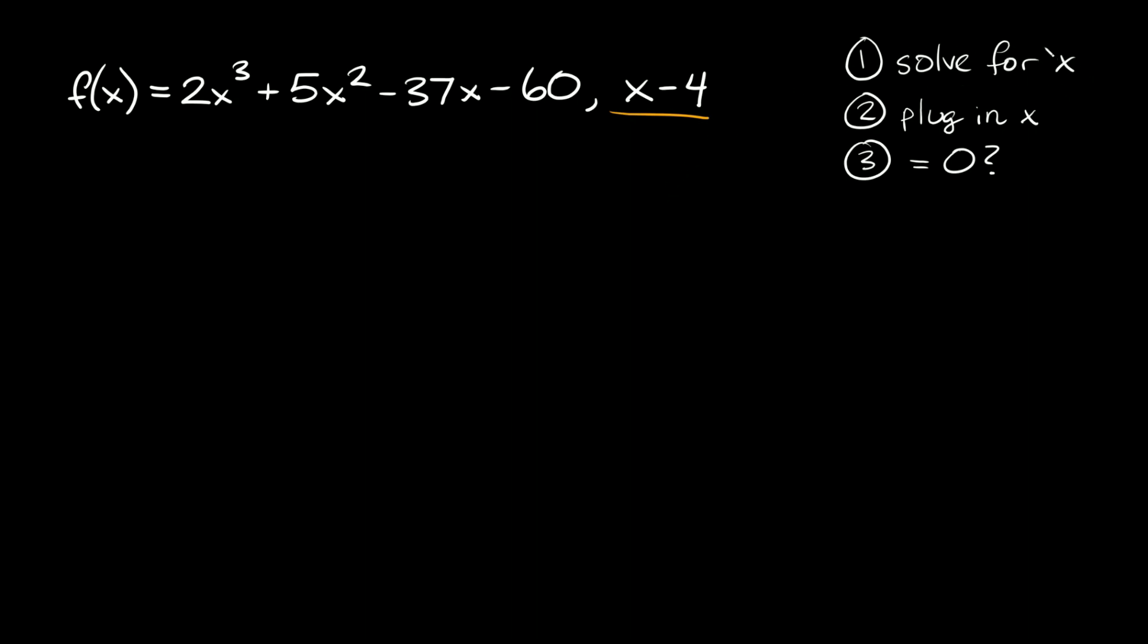The first thing we need to do is solve for x. So we're going to solve for x for our binomial. And the way you do that is just set this thing equal to 0. So x - 4 = 0. So here x is clearly equal to positive 4. That was step 1.